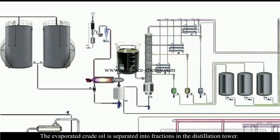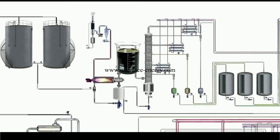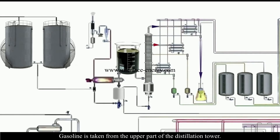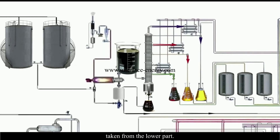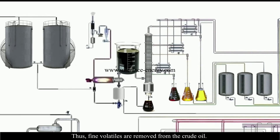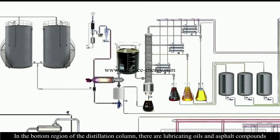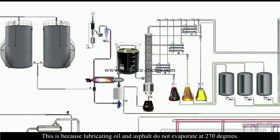The evaporated crude oil is separated into fractions in the distillation tower. Gasoline is taken from the upper part, kerosene from the middle part, and diesel fuels from the lower part. Fine volatiles are thus removed from the crude oil. In the bottom region of the distillation column, lubricating oils and asphalt compounds remain, as they do not evaporate at 270 degrees.